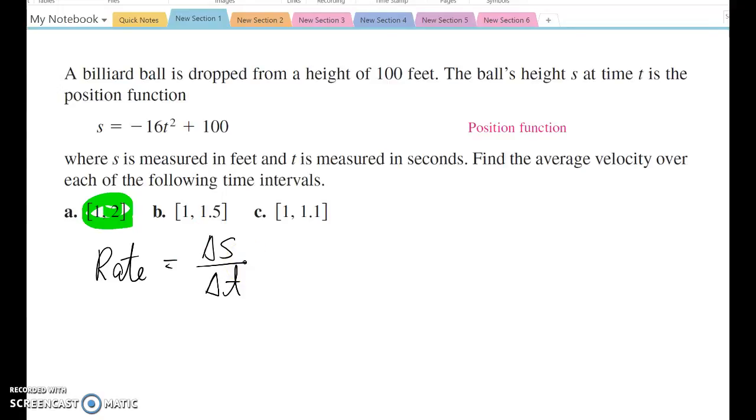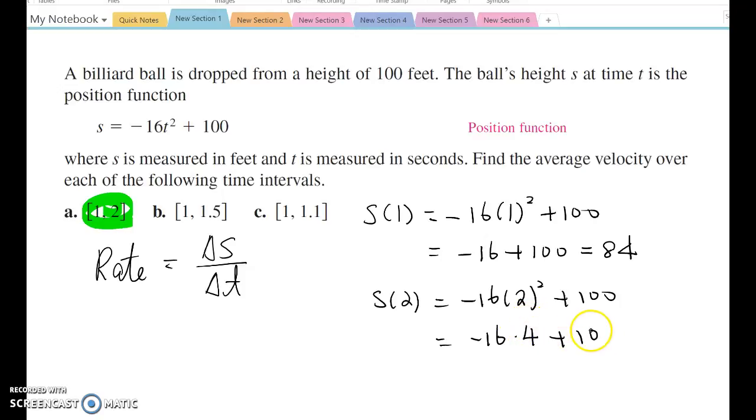Therefore, you need to find the position based on those two intervals. So I'm going to put s(1), which means negative 16 times 1 squared plus 100, which is negative 16 plus 100, equal to 84. Now, s(2), which is negative 16 times 2 squared plus 100, which means negative 16 times 4 plus 100, that equals negative 64 plus 100, equal to 36.